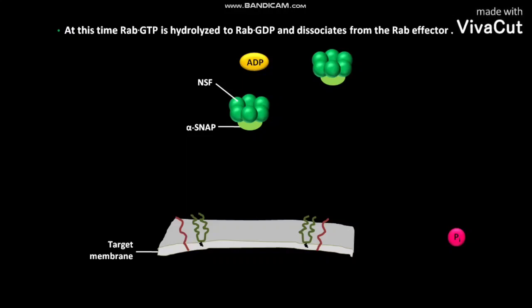At this time, Rab-GTP is hydrolyzed to Rab-GDP and dissociates from the Rab effector.